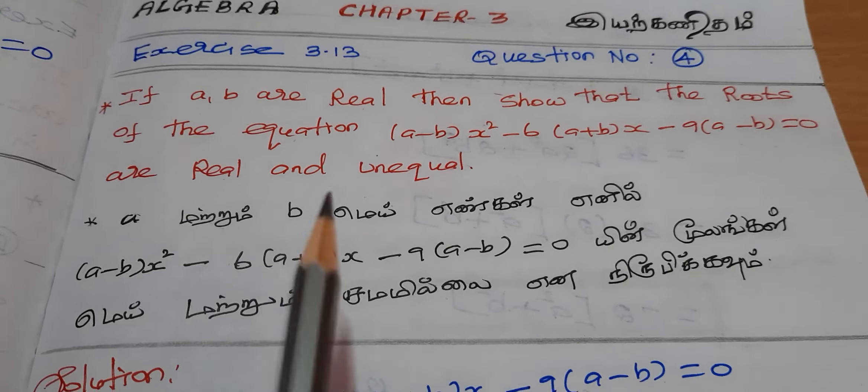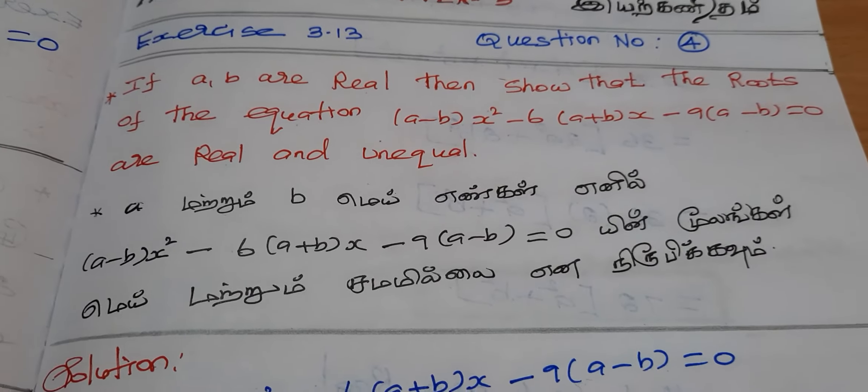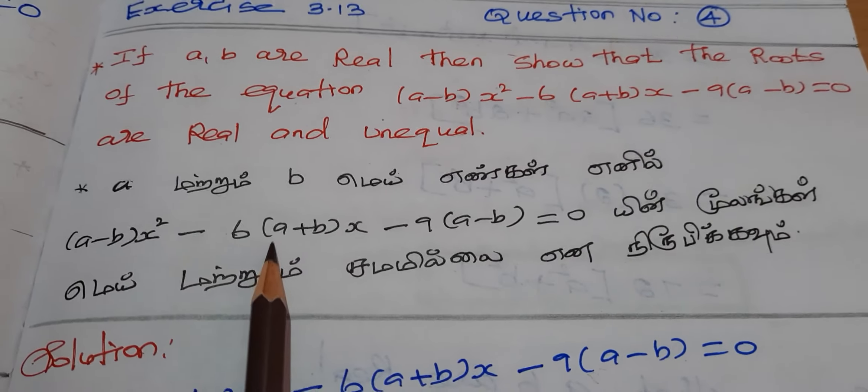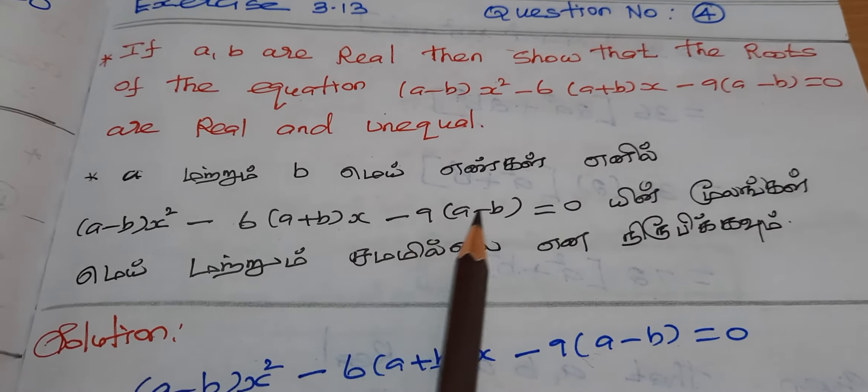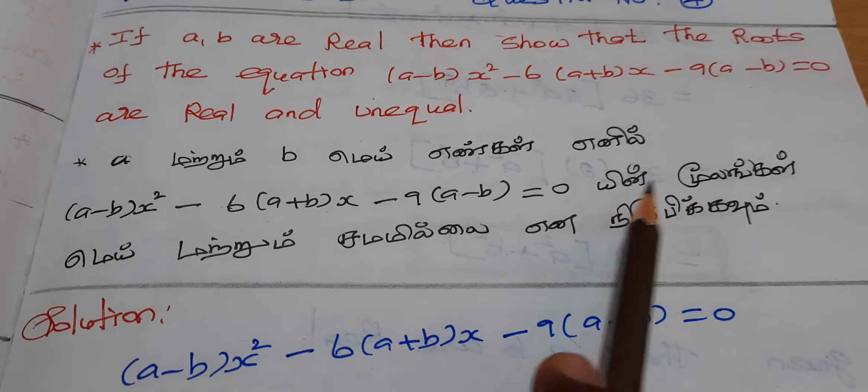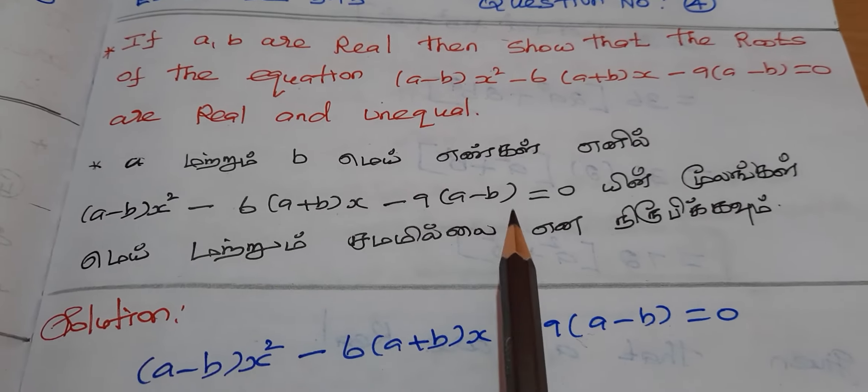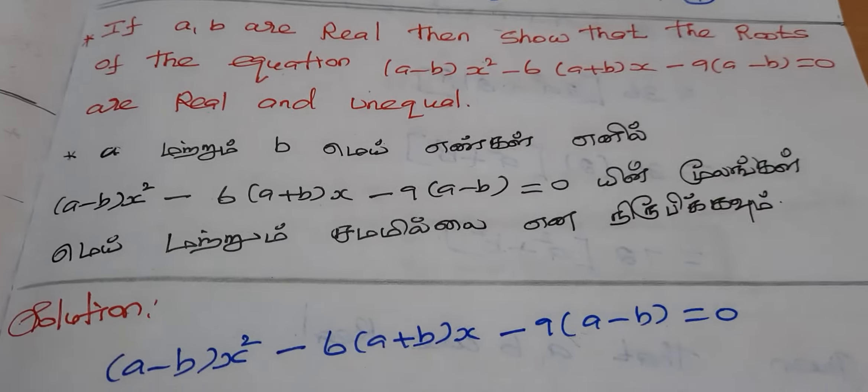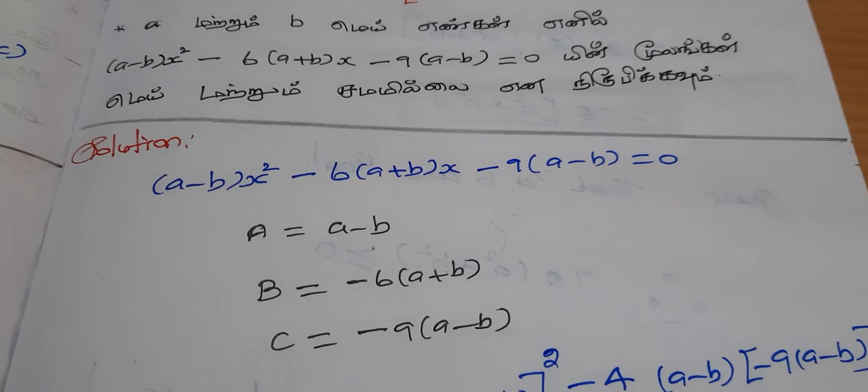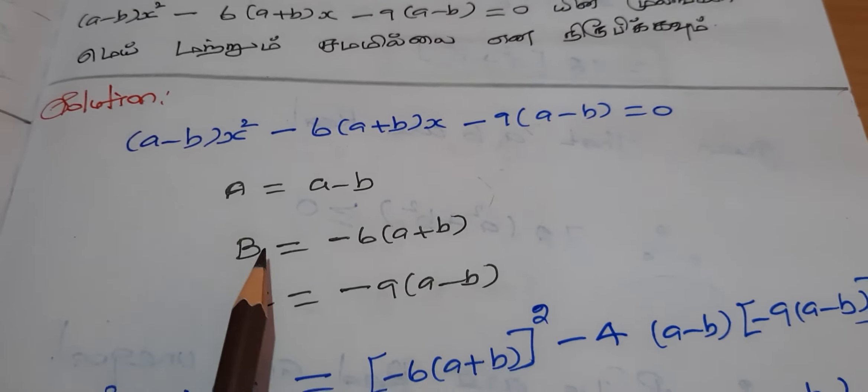The equation is (a-b)x² - 6(a+b)x - 9(a-b) = 0. Now, if a, b are real...